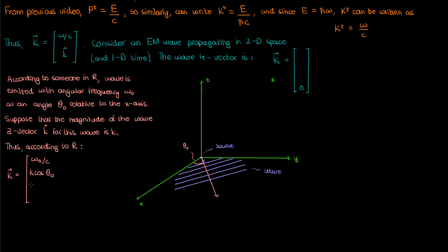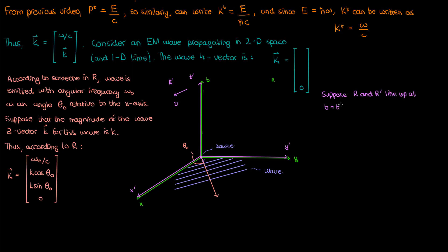The x component represents the degree to which the wave propagates in the x direction; by similar logic, the y component is k times sine theta-naught, and the z component is zero. Now suppose I have a different reference frame R' traveling at velocity v in the x direction relative to R, with axes aligned at t equals t-prime equals zero. An observer in R' will observe a wave vector K' for the electromagnetic wave, with components omega over c, k cosine theta, k sine theta, and a z component of zero. There's no reason for someone in R' to observe the wave going in the z direction when it wasn't emitted in that direction.